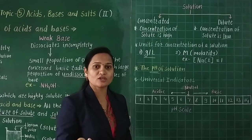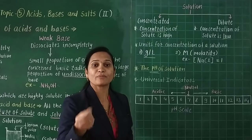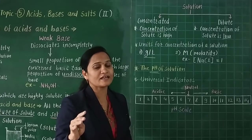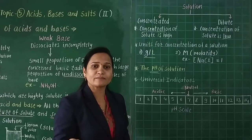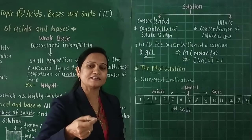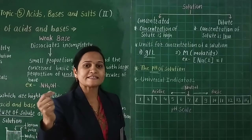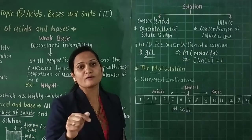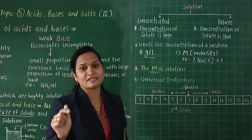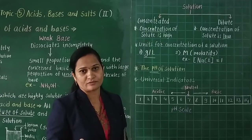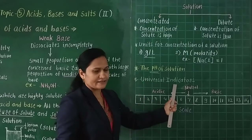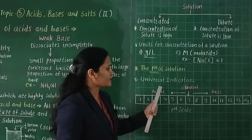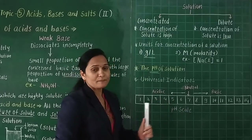According to the strength of acid and base, different values are given on the pH scale. For example, soil is divided into three types — acidic, basic, and neutral — and we can determine which type by seeing the pH value of the soil. The pH value represents the proportion of H+ and OH- ions present in the solution. The universal indicator is used to make the pH scale, with numbers 1 to 14.